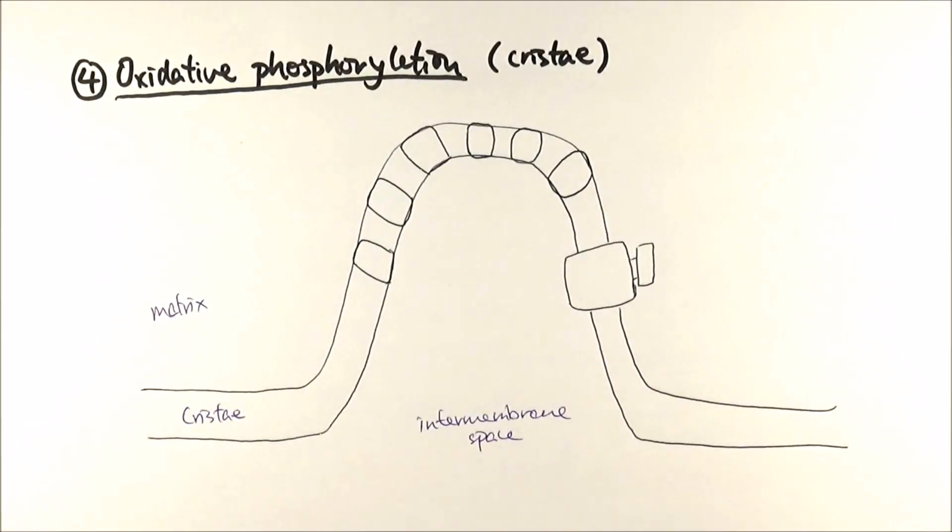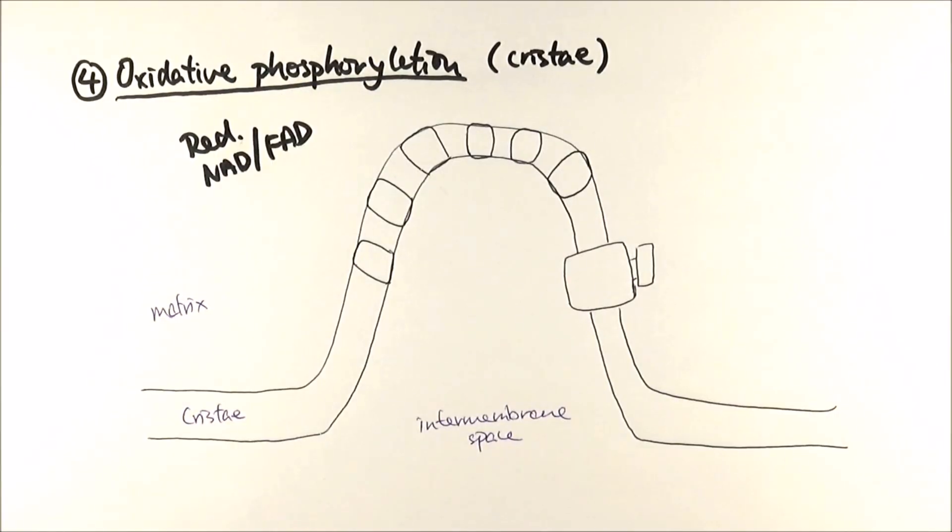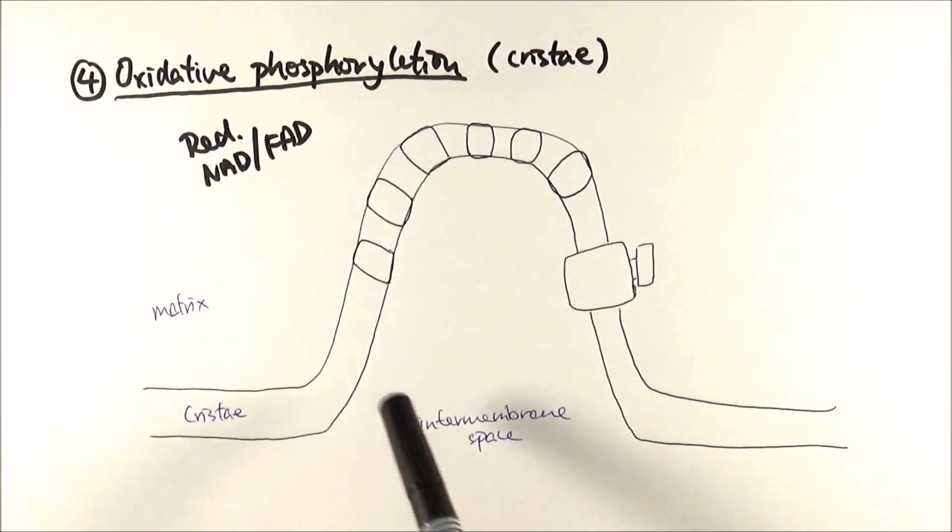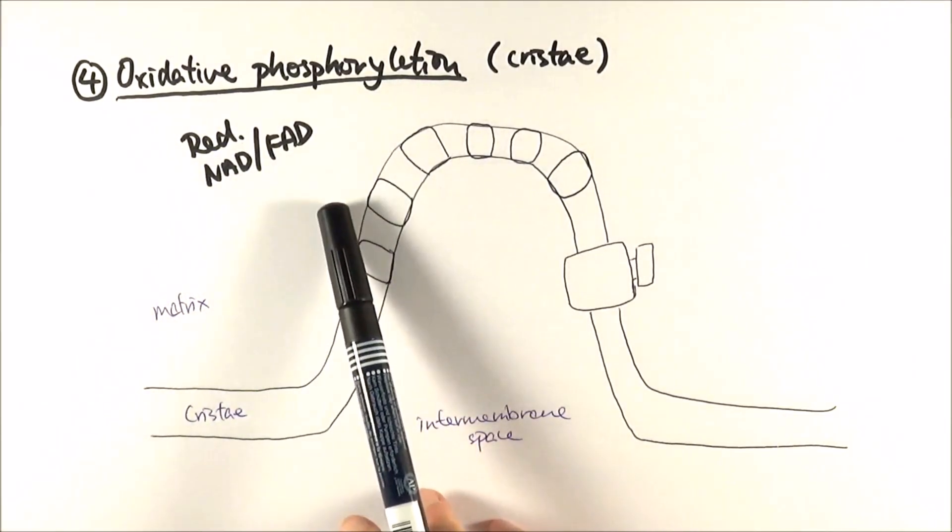As we mentioned in our previous videos about the stuff that's being made, the most important part of it are the reduced coenzymes, so reduced FAD and NAD. Now, the reduced coenzymes carry a different number of protons. Reduced NAD can carry one proton, and reduced FAD carries two protons.